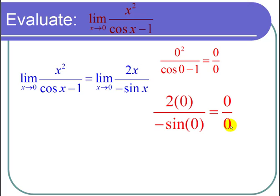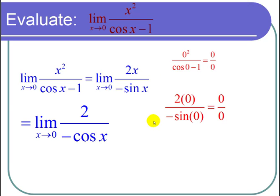So let's use L'Hopital's Rule one more time. We take the derivative of 2x and get 2. We take the derivative of negative sine of x and get negative cosine of x, and we still have a limit as x goes to 0.